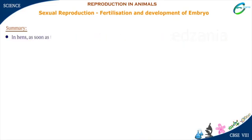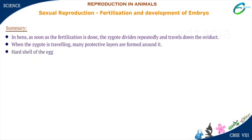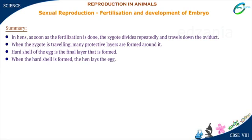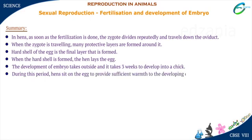In hens, as soon as fertilization is done, the zygote divides repeatedly and travels down the oviduct. When traveling, many protective layers are formed around it. The hard shell of the egg is the final layer formed. When the hard shell is formed, the hen lays the egg. The development of the embryo takes place outside and it takes three weeks to develop into a chick. During this period, hens sit on the egg to provide sufficient warmth to the developing embryo.